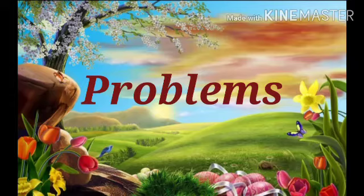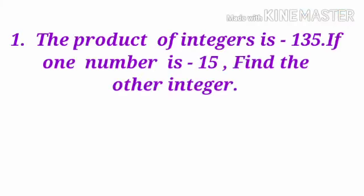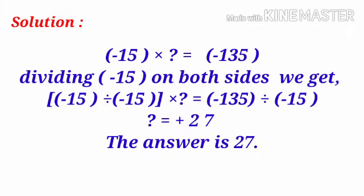Problem: the product of two integers is minus 135. If one number is minus 15, find the other number. Let the other number be the unknown. Then minus 15 into unknown equals minus 135. Dividing both sides by minus 15, the unknown equals minus 135 divided by minus 15. Since division of two integers with the same sign gives a positive integer, the answer is plus 27.